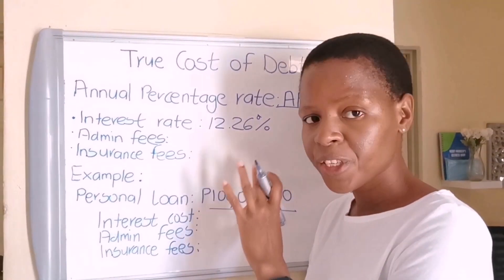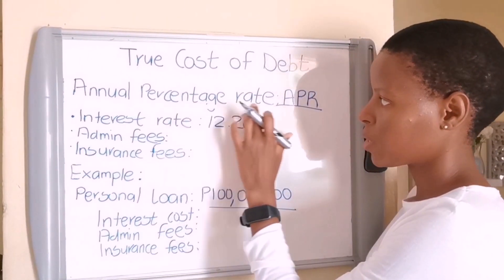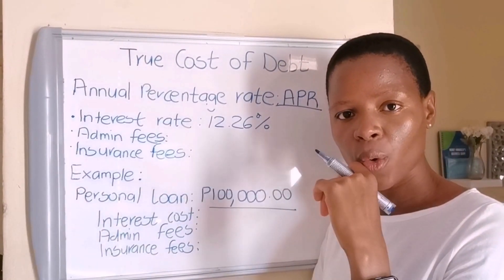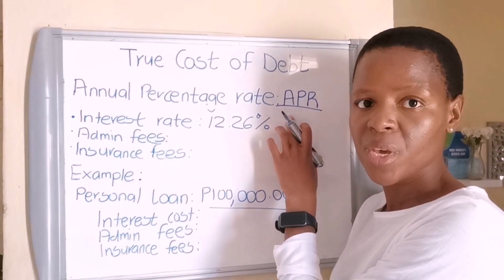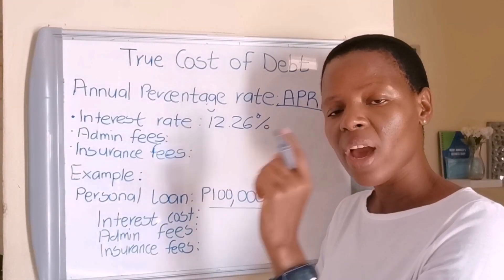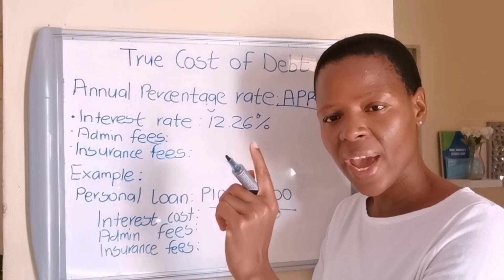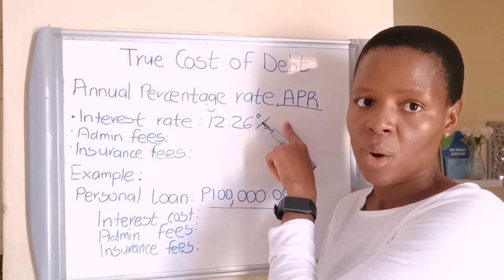Let's head over to our whiteboard. Let me show you how this APR is calculated and its components so you can have a full appreciation of what this thing is. The true cost of debt is this thing you see here. I've asked you to look at your loan agreement and you are going to see this term: Annual Percentage Rate, abbreviated as APR. This is your true cost of debt. Every little fee you pay towards the acquisition of your loan will go towards the Annual Percentage Rate.